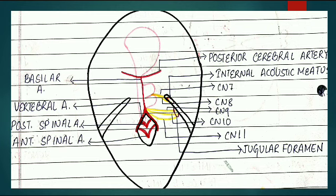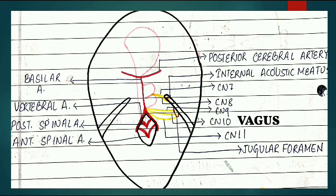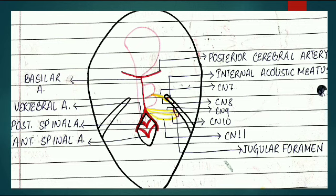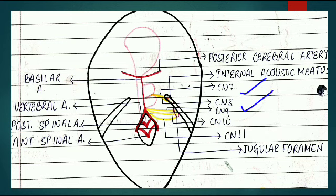Moving further down at the medulla, cranial nerves nine, ten, and eleven are arising. The tenth nerve is your vagus nerve, the ninth nerve is your glossopharyngeal nerve, and the eleventh nerve is your accessory nerve.